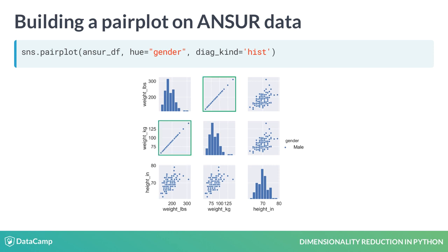We can spot that the weight in pounds is perfectly correlated to the weight in kilograms, since all points fall on a diagonal line. Since both features hold the same information, it makes perfect sense to drop one of them.